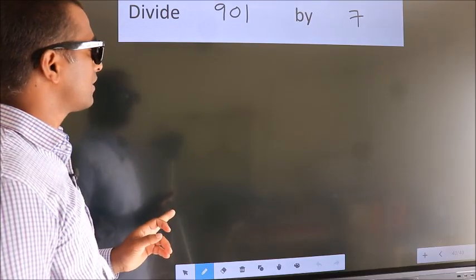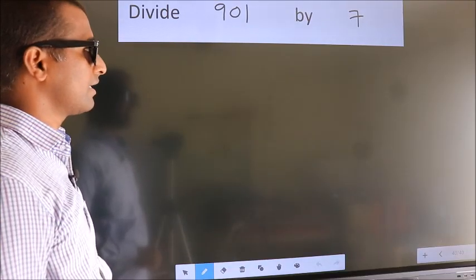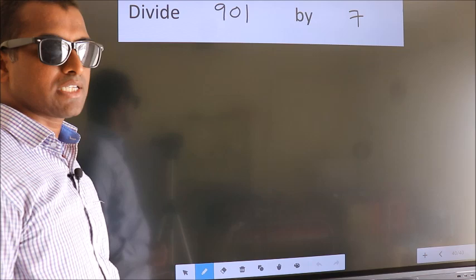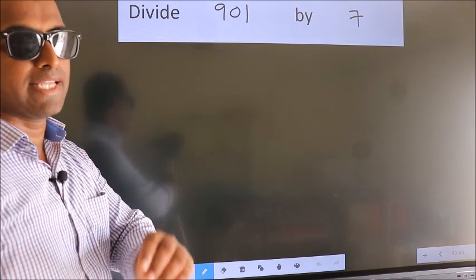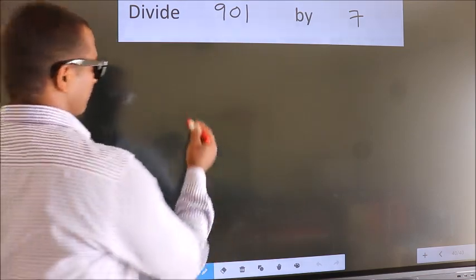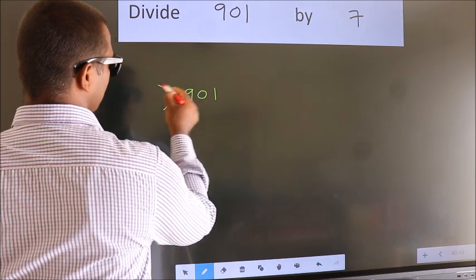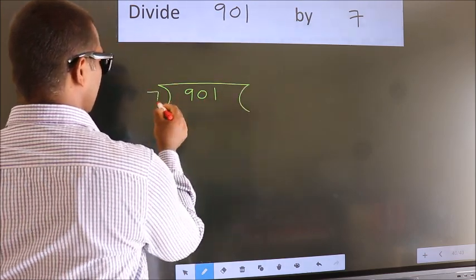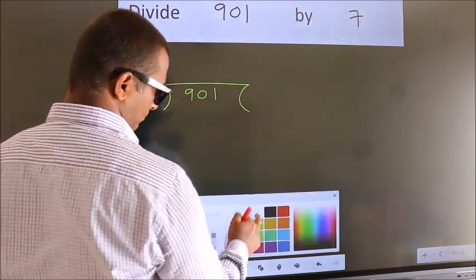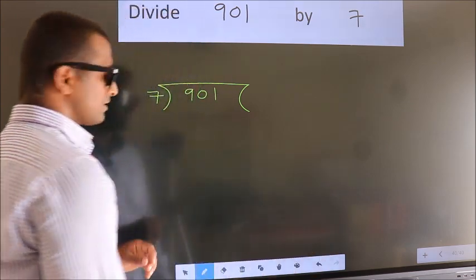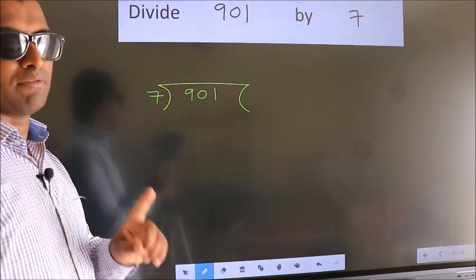Divide 901 by 7. To do this division, we should frame it in this way. 901 here, 7 here. This is your step 1.